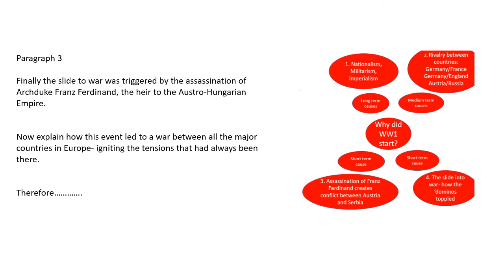You should have spent perhaps about two minutes on paragraph two, so you should now be on paragraph three — the final paragraph. This is where you explain the immediate cause of the war, and again you'll use your mind map to help you. Here I've given you the first opening point: 'Finally, the slide to war was triggered by the assassination of Archduke Franz Ferdinand, the heir to the Austro-Hungarian Empire.' Now I need to use my mind map, my own knowledge, and my explanation to explain how this event led to a war between all the major countries in Europe, how it ignited the tensions that had always been there — the tensions you've explored in paragraphs one and two. At the end you need to link back. You should aim to spend about 10 to 15 minutes on this paragraph, and once that's complete, you've done your assessment. You should have created three PEEL paragraphs explaining the long, medium, and short-term causes of World War One.